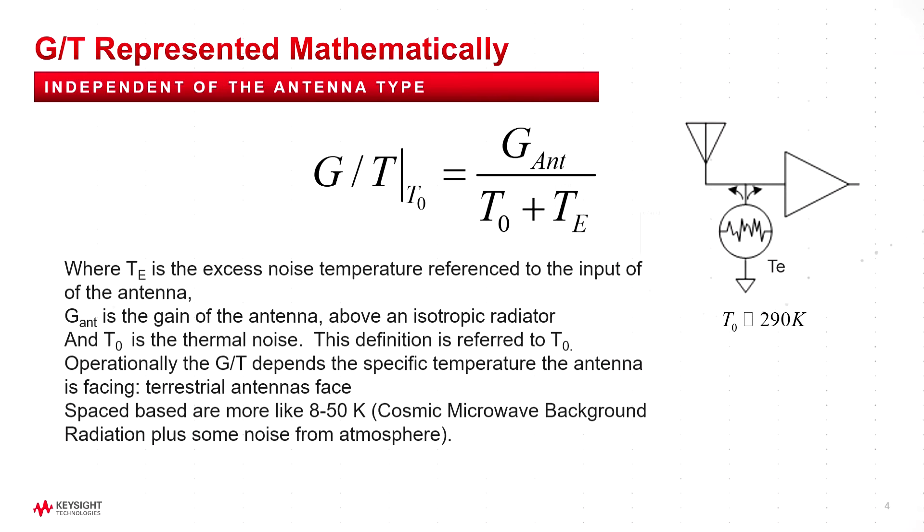So what is G/T? G/T really came from the original space telescopes, radio telescope work. It's the gain of the antenna and here the gain means the gain over an isotropic radiator. Another way of saying that is the directivity of an antenna, kind of the beam angle of the antenna.